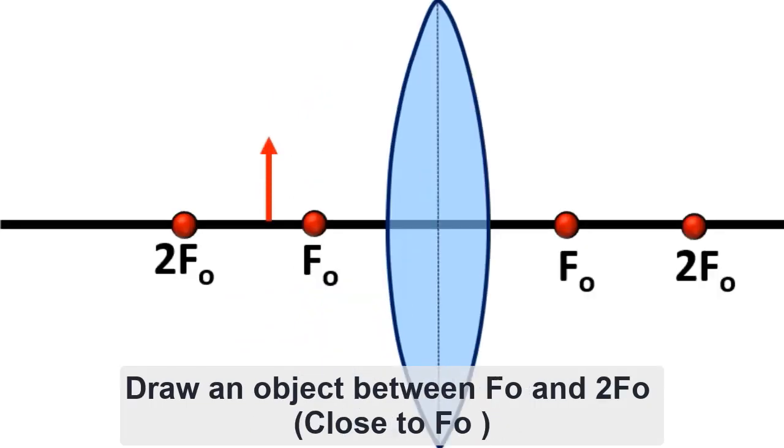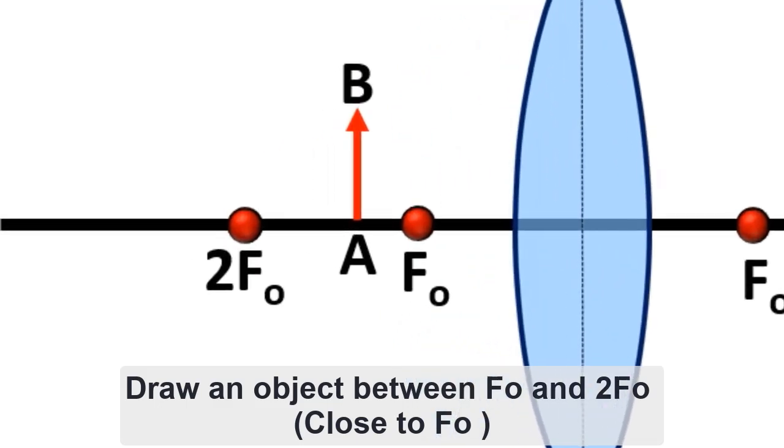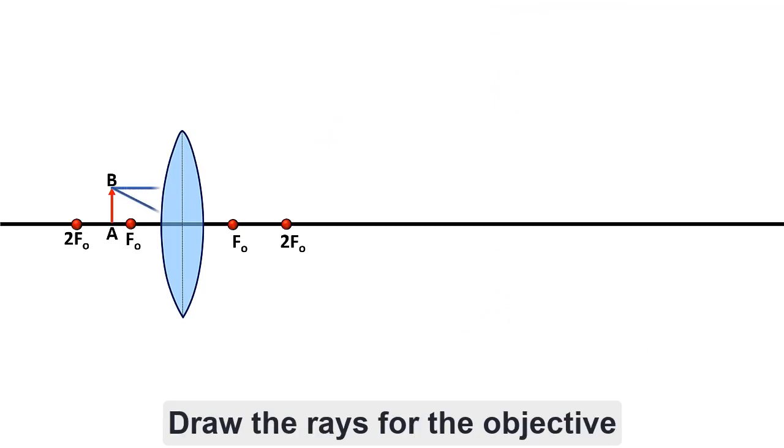Draw an object between fo and 2fo. Keep the object close to fo. Draw the rays for the objective.